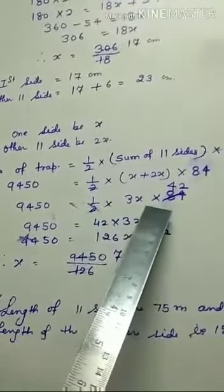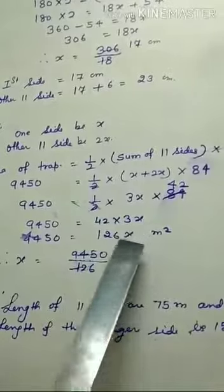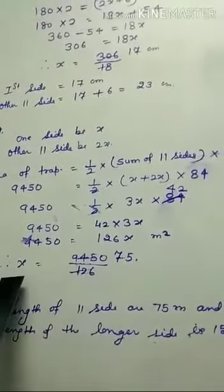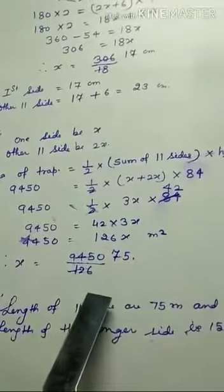Multiply by 2 and 84, they cancel to 42 times 3x equals 126x. So x equals 9450 divided by 126.